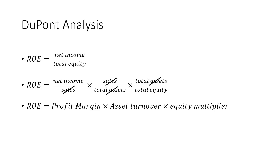The equity multiplier exceeds 1 because the company carries debt — the more debt the company has, the larger its balance sheet relative to owner's equity. However, too much debt can be problematic: if the company becomes slightly unprofitable, bondholders and lenders will demand repayment, which directly impacts equity prices. Therefore, the company must carefully balance its total debt to total equity — the equity multiplier is essentially another form of the debt ratio.